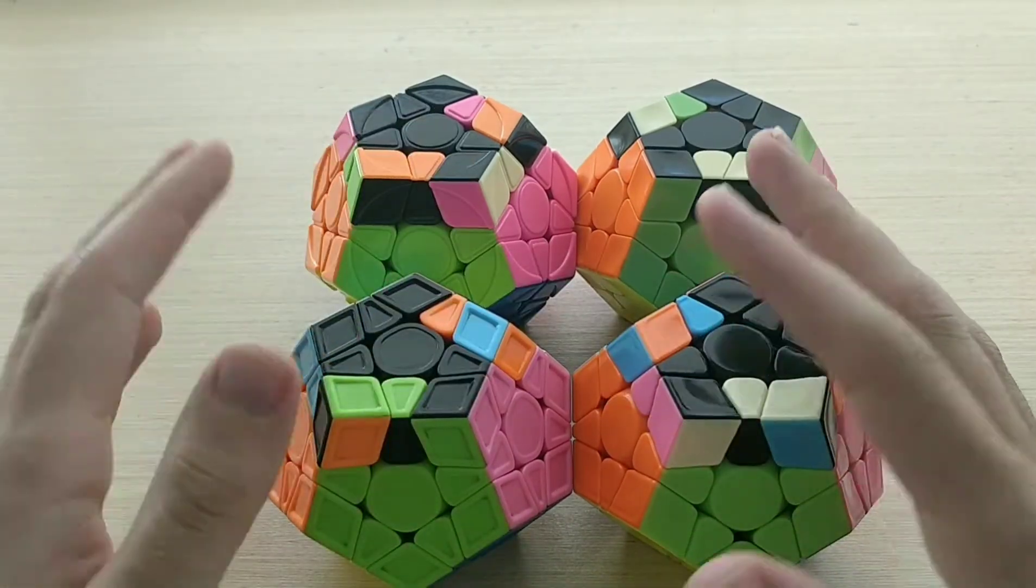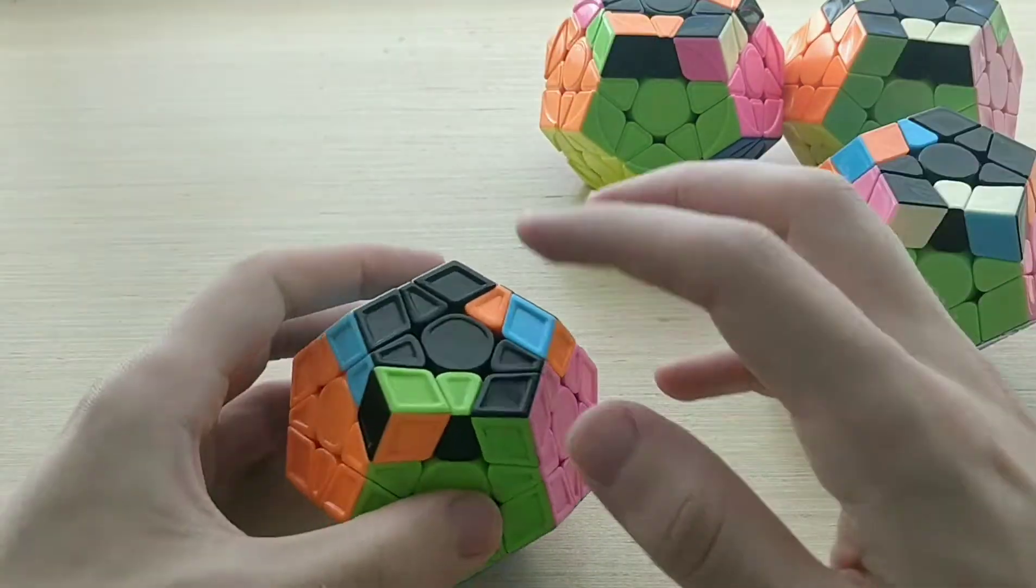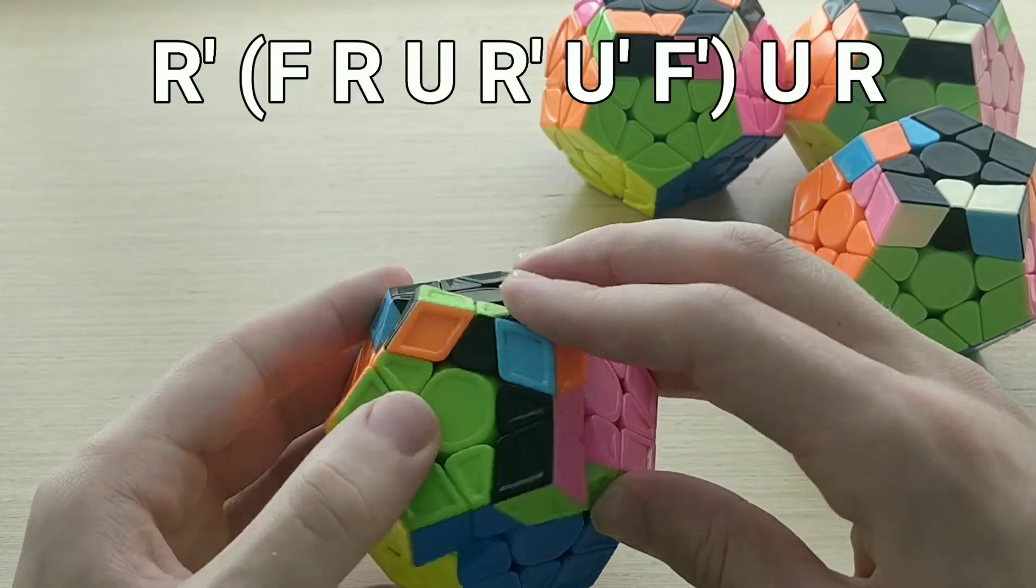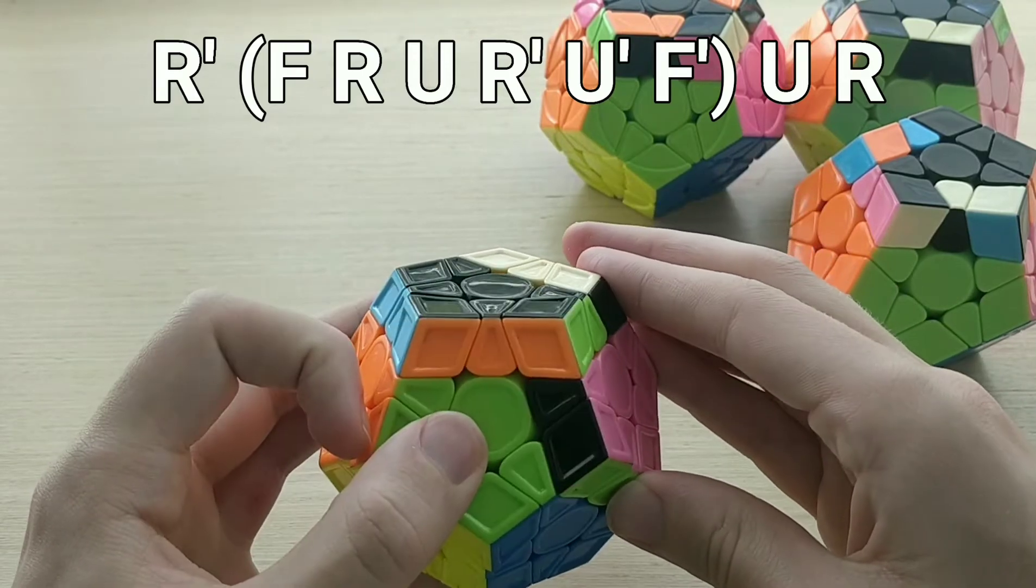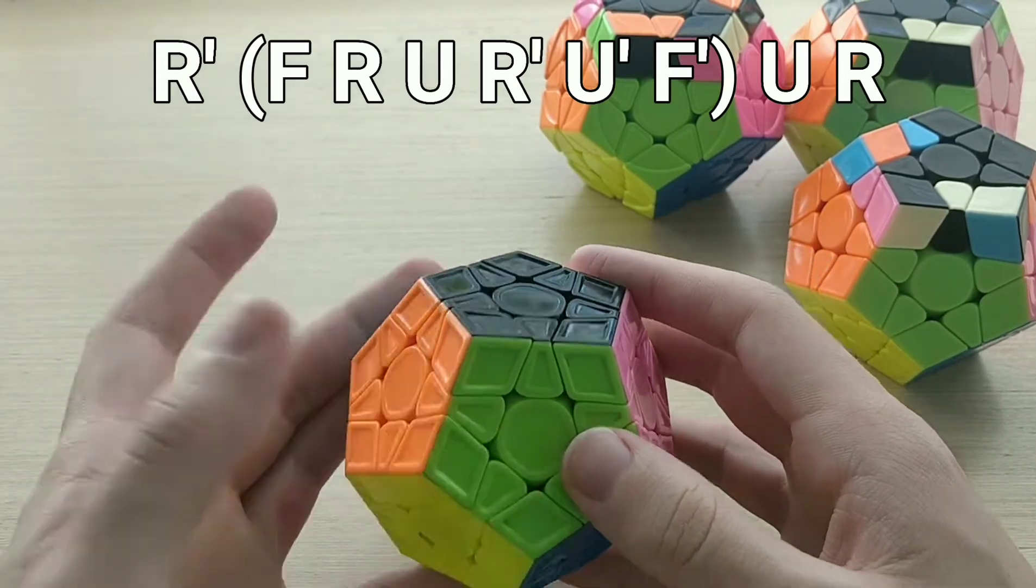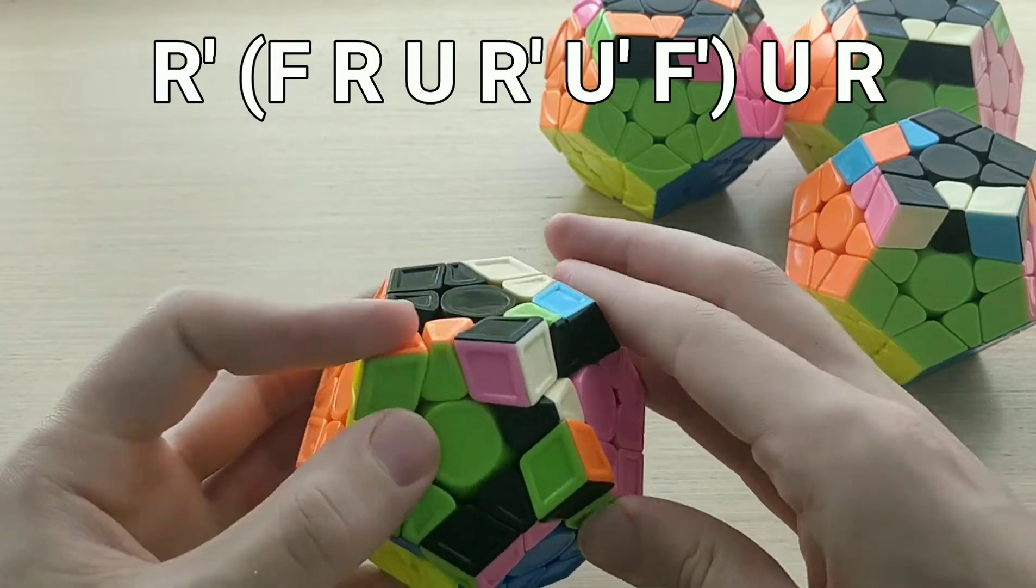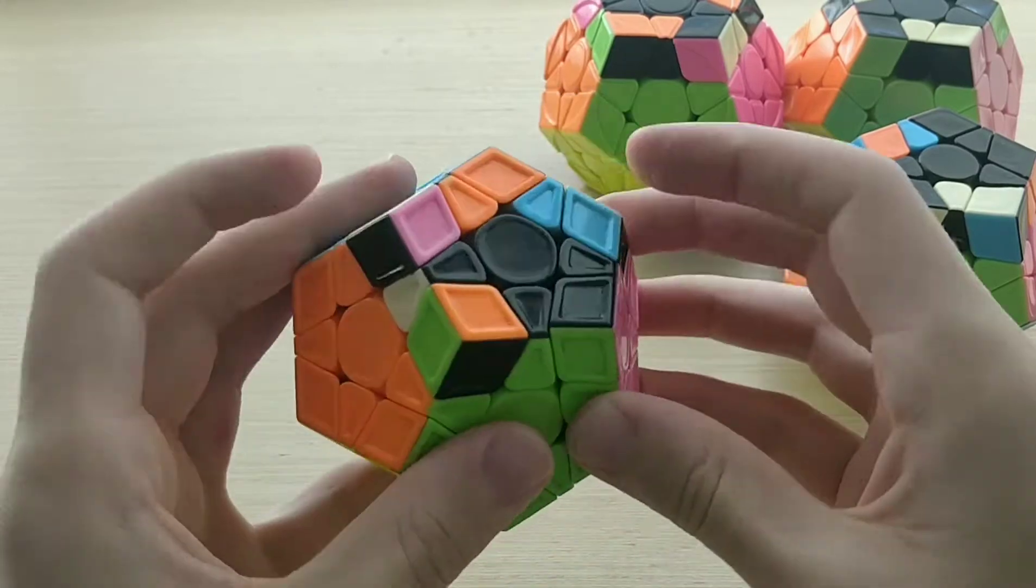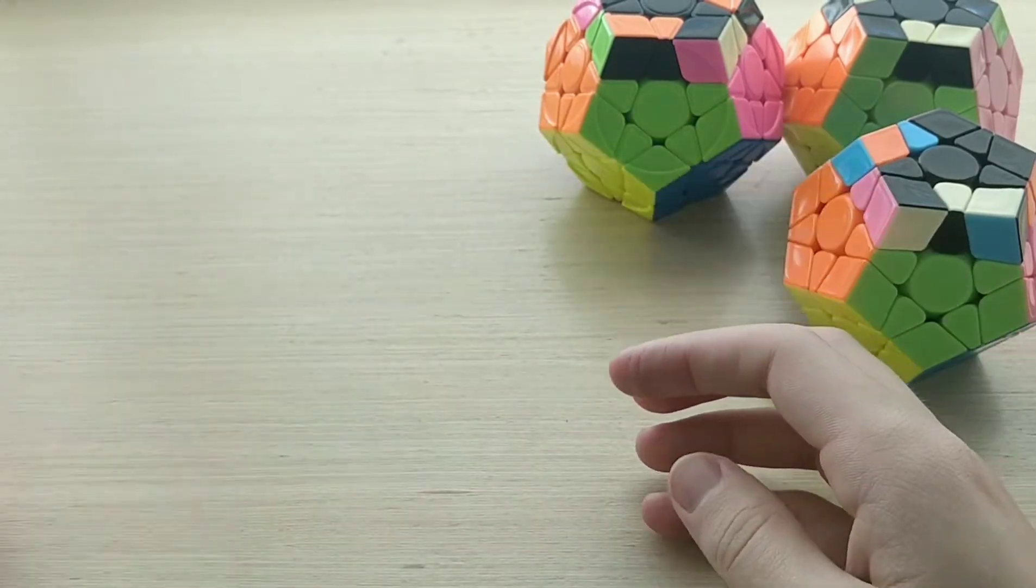So very straightforward recognition. As for the algs, like I said, this is one of the standard ones we'd use on 3x3, or probably the standard one, which is just r' f, sexy, f' u r. So no real special fingertips there, I guess the index pinch, but other than that, it's very standard. So it looks like that.